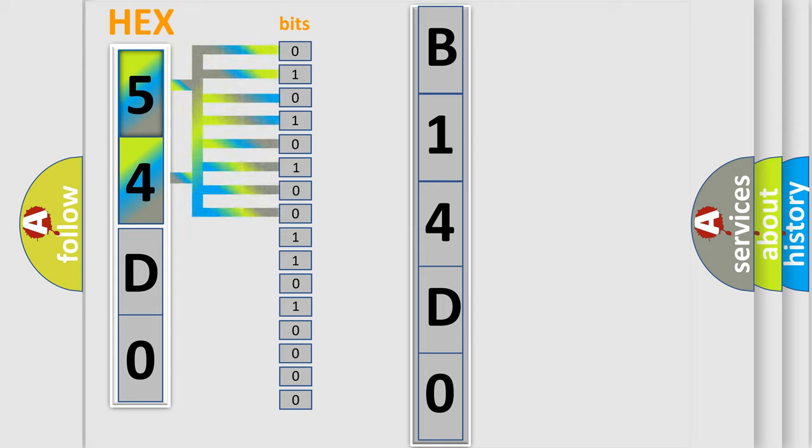Zero represents low level. One represents high level. By combining the first two bits, the first character of the error code is expressed. The next two bits determine the second character.